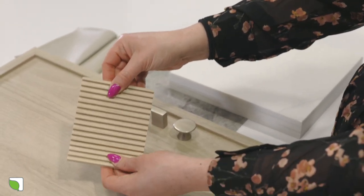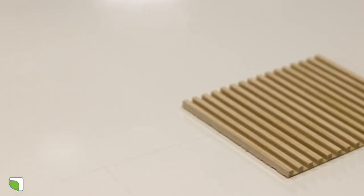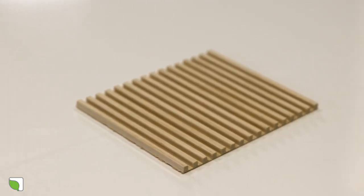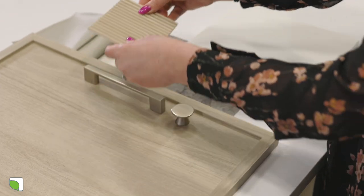To go along with the modern feel of this cabinet door I pulled this linear accent wood grain. This is super hot right now, you'll see it on accent walls and mantles, really anywhere.